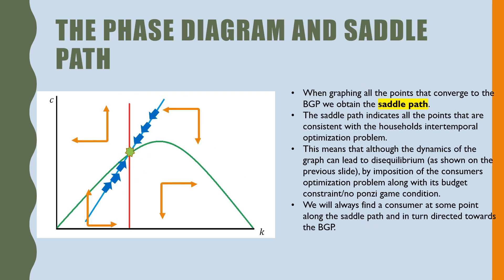When graphing all these points that converge to a BGP, we obtain the saddle path. The saddle path indicates all the points that are consistent with the household's intertemporal optimization problem.